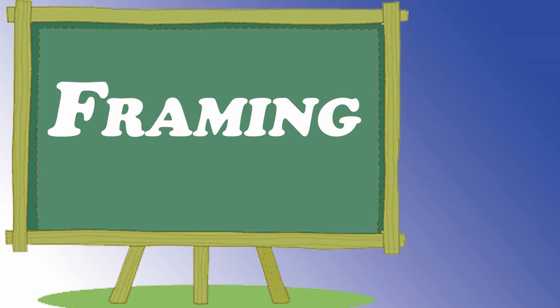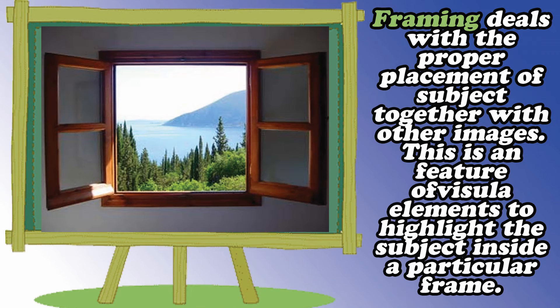Another visual element is what we call framing. Framing deals with the proper placement of a subject together with other images. This is a picture of visual elements used to highlight the subject inside a particular frame. Look at this picture — the subject here is not the window; the subject is the scenery. The subject is being enclosed or put in a frame, which is the window. This is what we call framing.